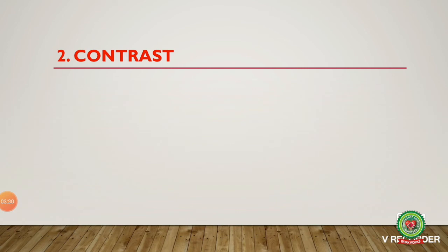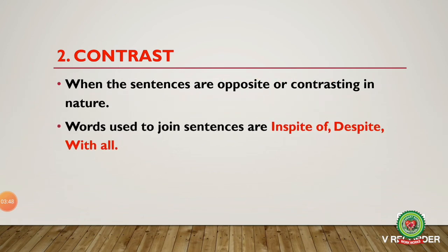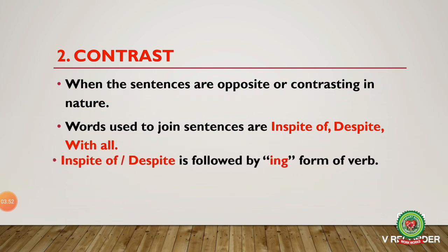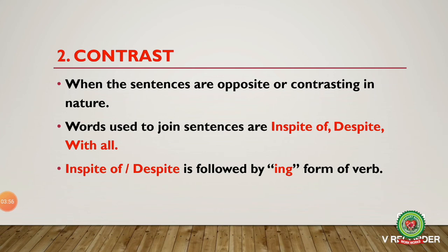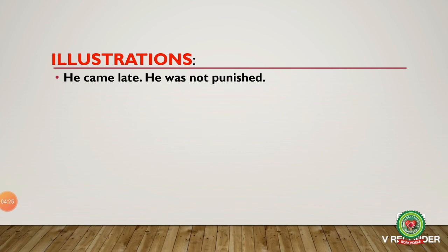The second situation is contrast — when the sentences are opposite or contrasting in nature. Basically, whenever you feel like using 'but' to join two sentences, we can use words like 'in spite of,' 'despite,' and 'with all.' The rule for 'despite' is that we never use 'of' with it, and like 'besides,' it is followed by the -ing form of the verb. 'With all' is always followed by a noun or pronoun.